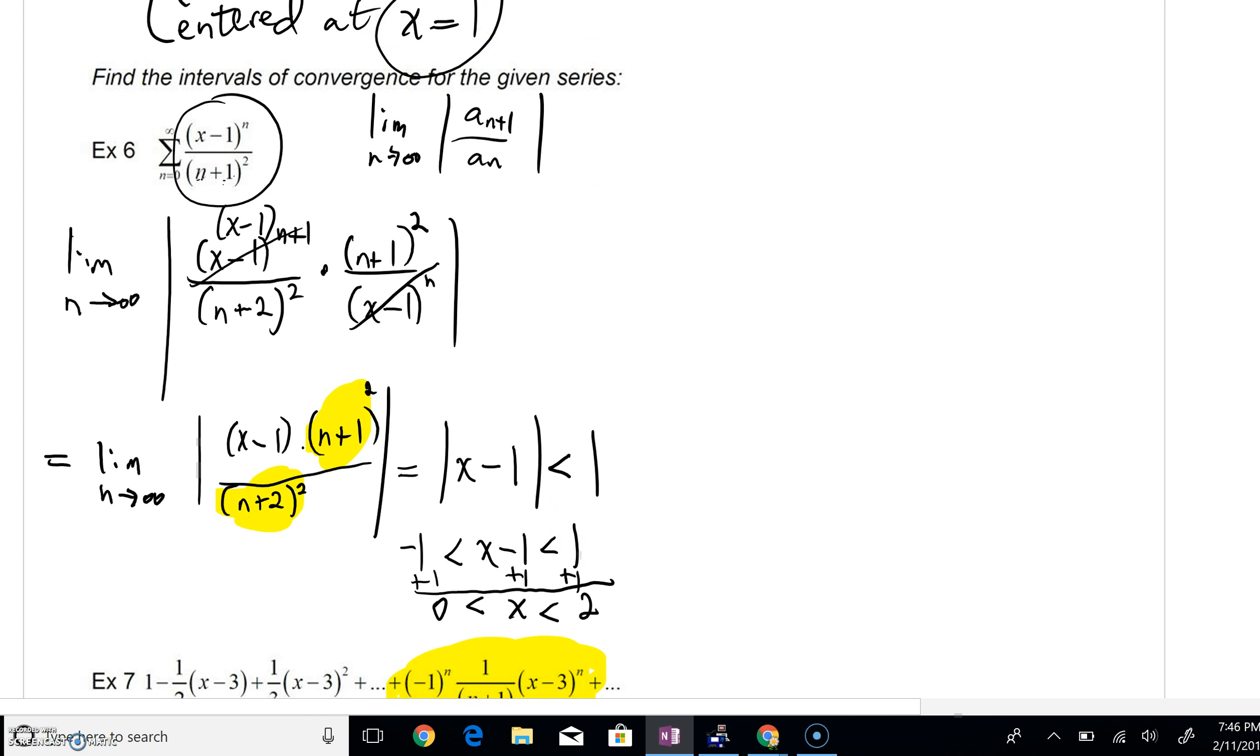Now I do want to point out one other thing that we can be looking at. You've got to remember we're centered at x minus one. But once you get to this point, once you've isolated the x minus c, you're always going to see that once you've solved for that, the radius is going to be here on the right hand side then. So our radius of convergence is going to be one.